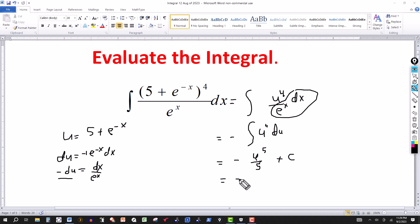And then we just go back to the original variable, replace the u by 5 plus e to the minus x. And this is to the fifth power, that's over 5, plus the constant of integration.